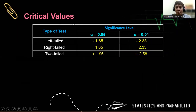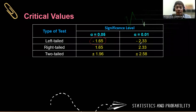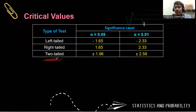For the critical values: for a left-tailed test, we have negative 1.65 when alpha is 0.05, and negative 2.33 when the confidence level is 99%. For a right-tailed test, simply make them positive: 1.65 and 2.33 respectively. For a two-tailed test, the most commonly used are positive/negative 1.96 for a 95% confidence level and positive/negative 2.58 for a 99% confidence level.